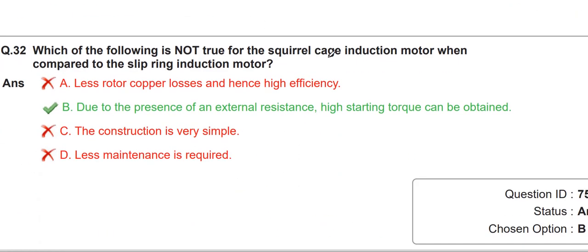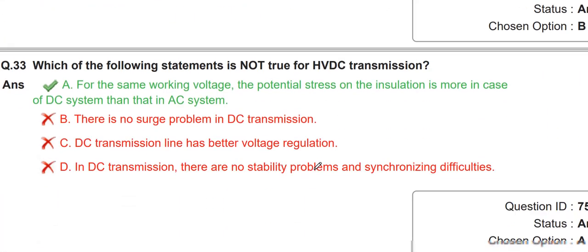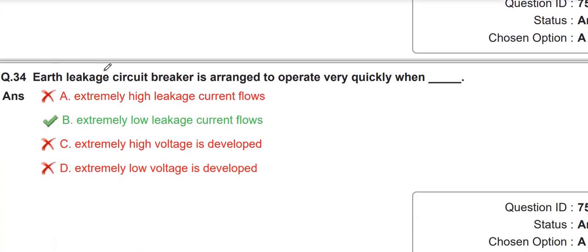The next question is also theoretical — the relation between the squirrel cage induction motor and the slip ring induction motor. They are asking about the not-true statement. The not-true option is that due to the presence of external resistance — we know external resistance is used in the slip ring motor, not in the squirrel cage motor. They are also asking about HVDC transmission: an earth leakage circuit breaker (ELCB) is arranged to operate very quickly when extremely low leakage current flows.